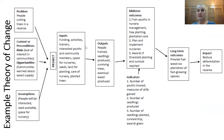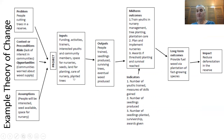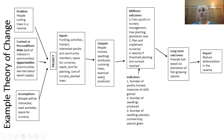The inputs necessary for this project include the funding, the activities, people to be trainers, youth and community members to be trained, space for the nursery, seeds, land for planting, and the care given to seedlings in the nursery and to trees that have been planted out. Then our outputs over time would be people trained, seedlings produced, surviving trees planted out into the plantations, and eventually wood production.